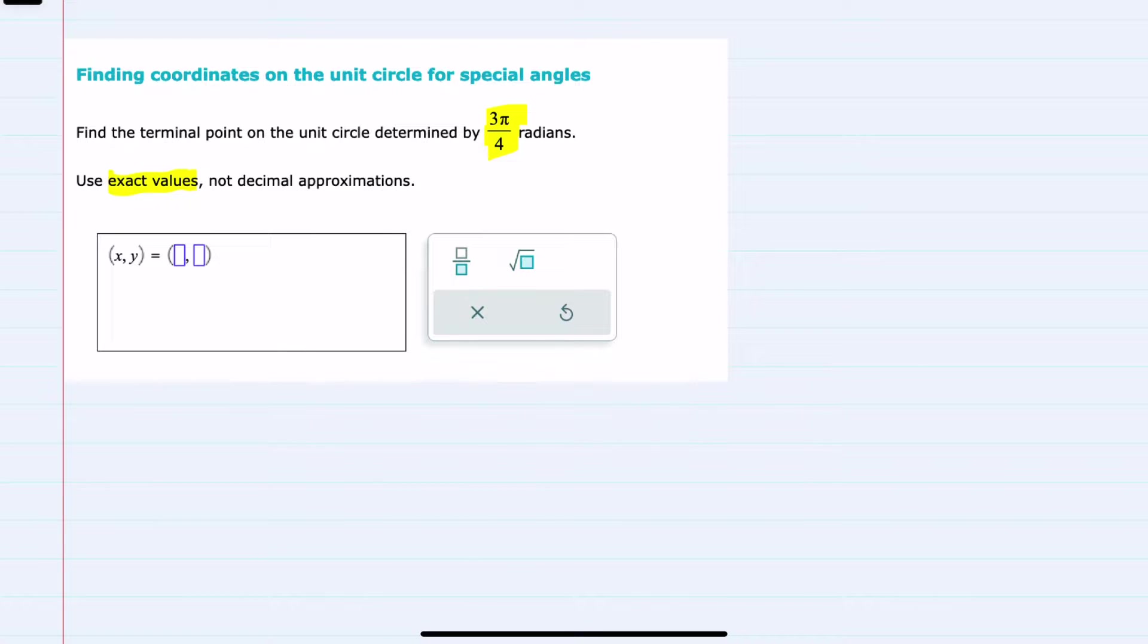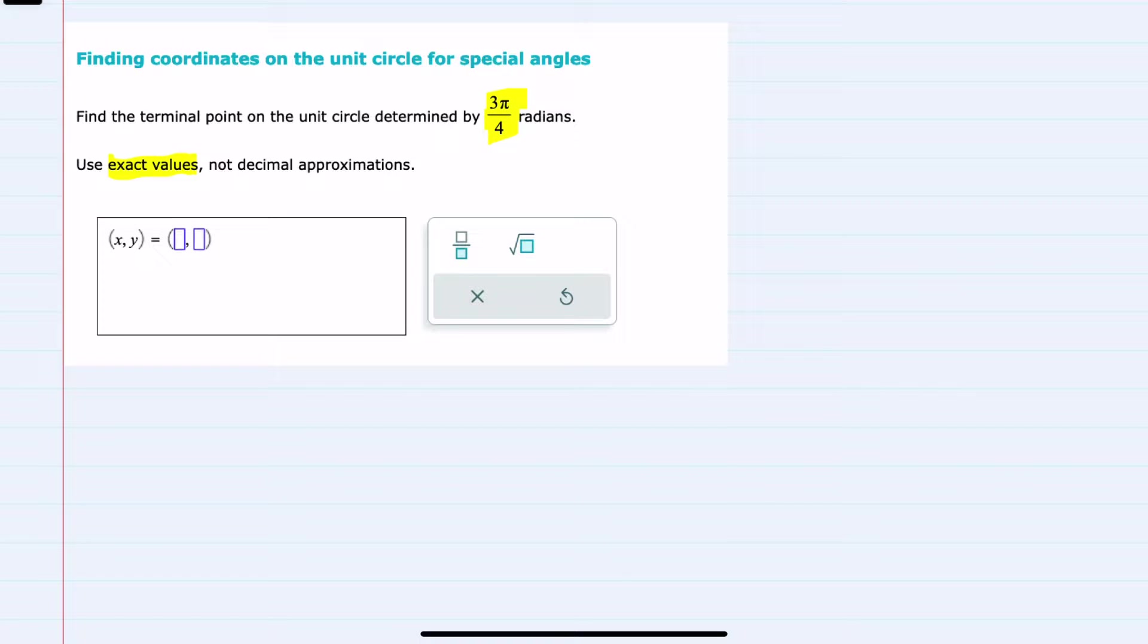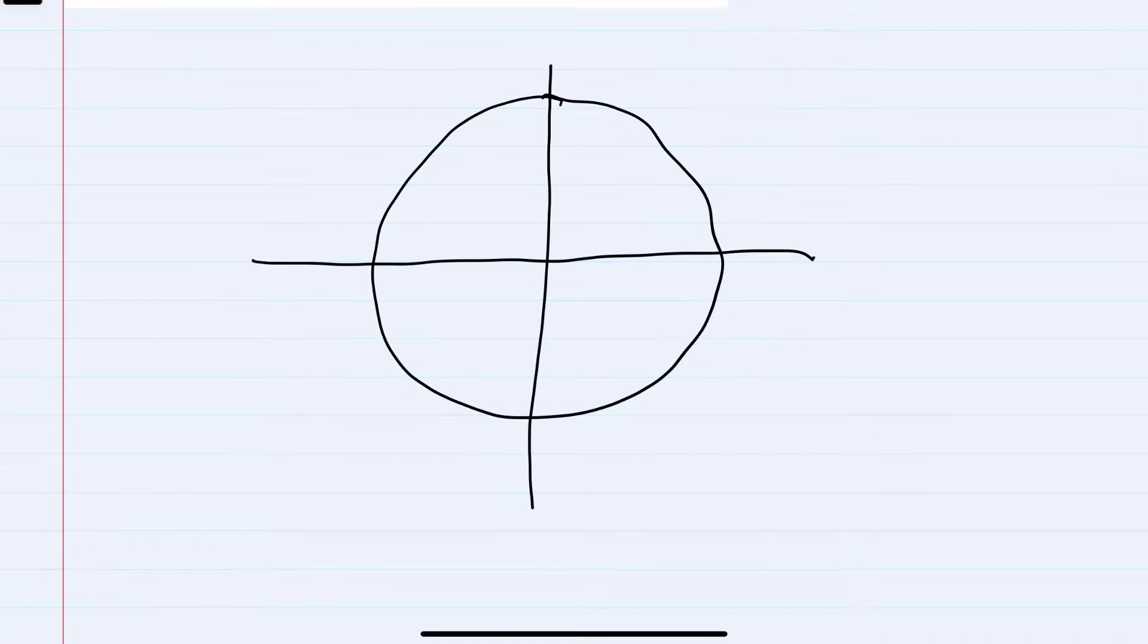Before I find the terminal point for that specific special angle, I'm going to generate all of the special angles.